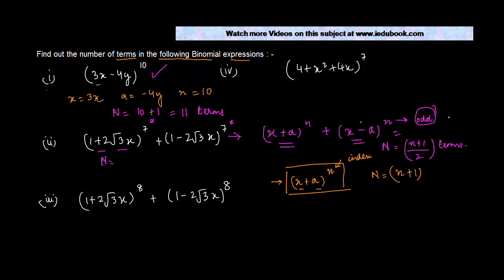Now in this case the value of n is 7 which is an odd number. If it is even, then n is equal to n by 2 plus 1.